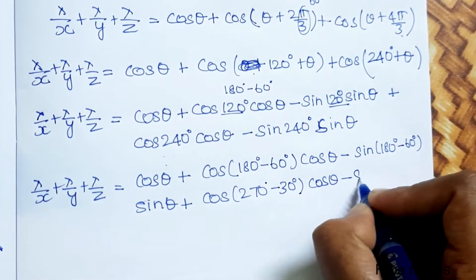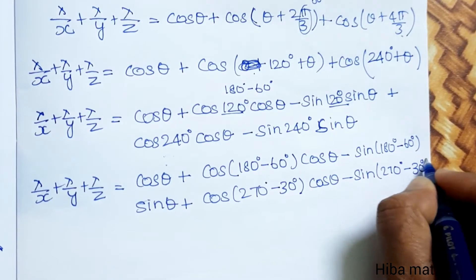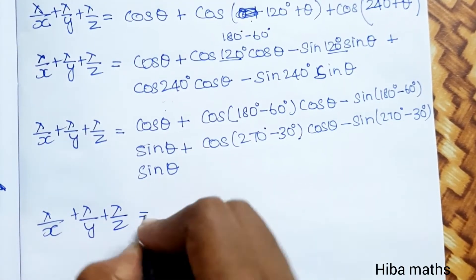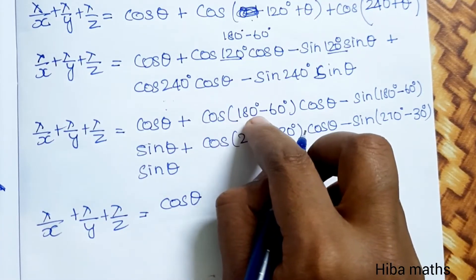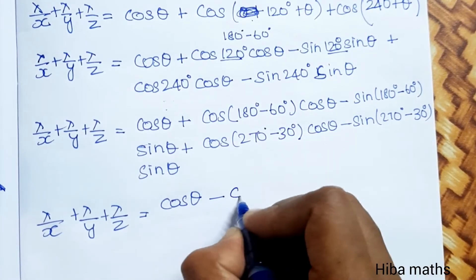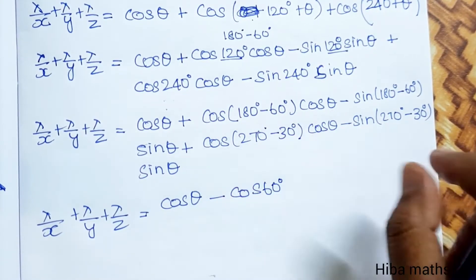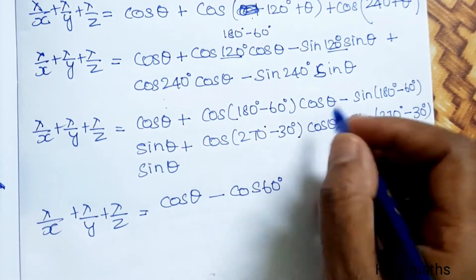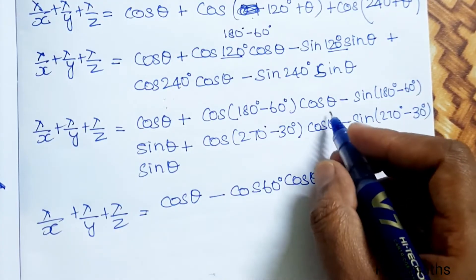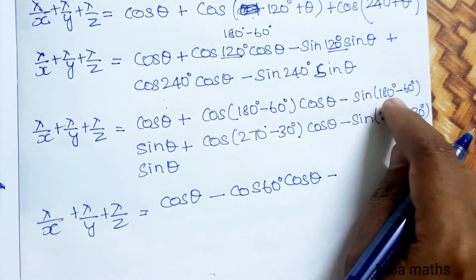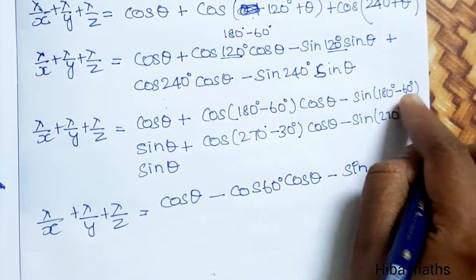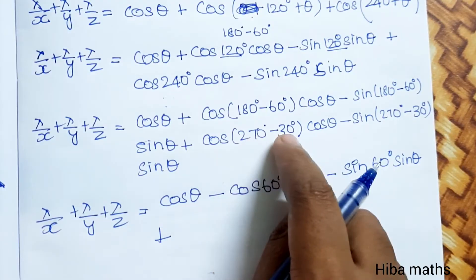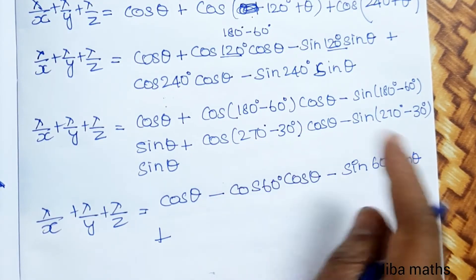Applying identities: cos(180° − θ) = −cos θ and sin(270° − 30°) into sin θ. Using cos 180° − θ = −cos θ, and sin 180° − θ = sin θ. So cos 60° gives value, and sin θ terms are simplified accordingly through these standard identities.